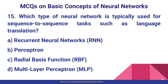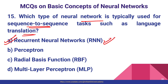Question number fifteen: which type of neural network is typically used for sequence-to-sequence tasks such as language translation? For sequence-to-sequence and NLP tasks like language translation, we use RNN — Recurrent Neural Network.